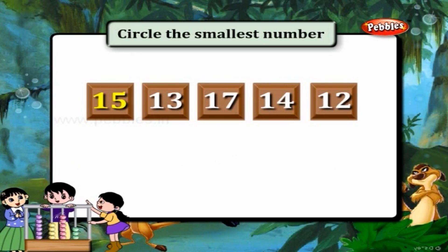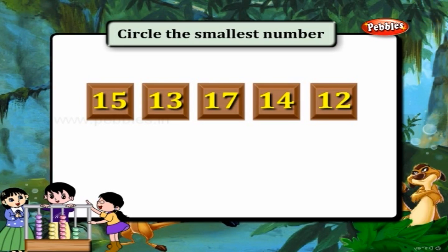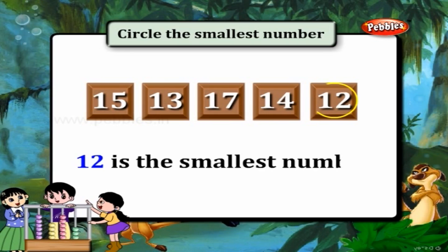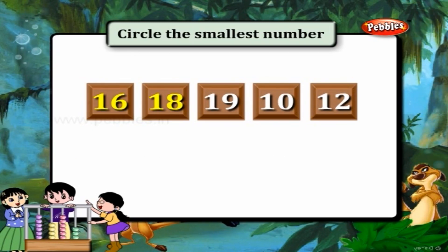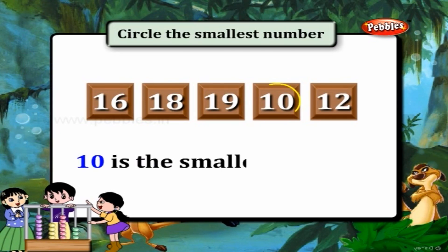15, 10 — 10 is the smallest number. Next set: 16, 18, 19, 10, and 12. 10 is the smallest number.